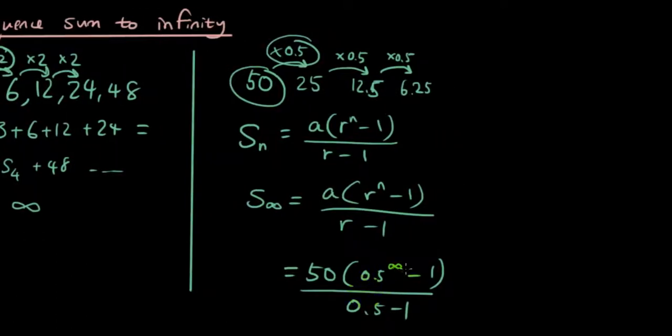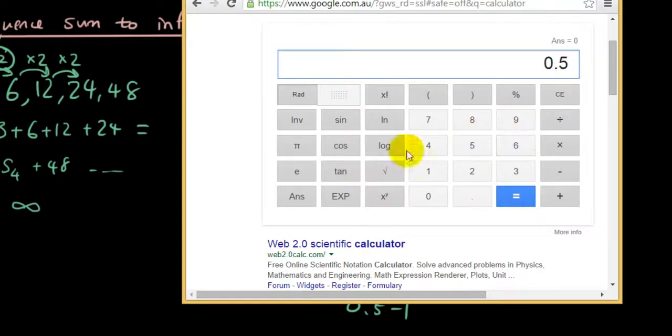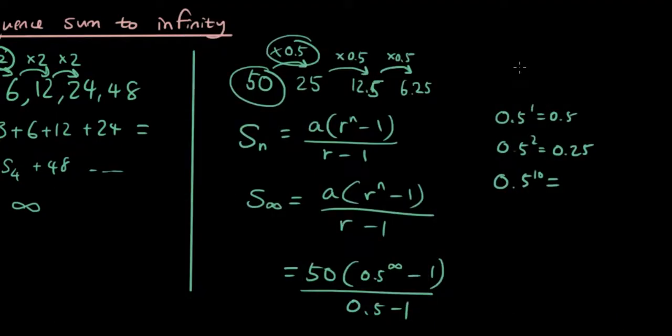Now, what is 0.5 to the power of infinity? So you can see here, if I have 0.5 to the power of 1 is 0.5. 0.5 to the power of 2 is 0.25. 0.5, let's type in to the power of 10 in the calculator. 0.5 to the power of 10. You get 0.00097. So the numbers will get smaller and smaller, and closer and closer to 0. So basically 0.5 to the power of infinity, you can roughly say it's very close to 0.